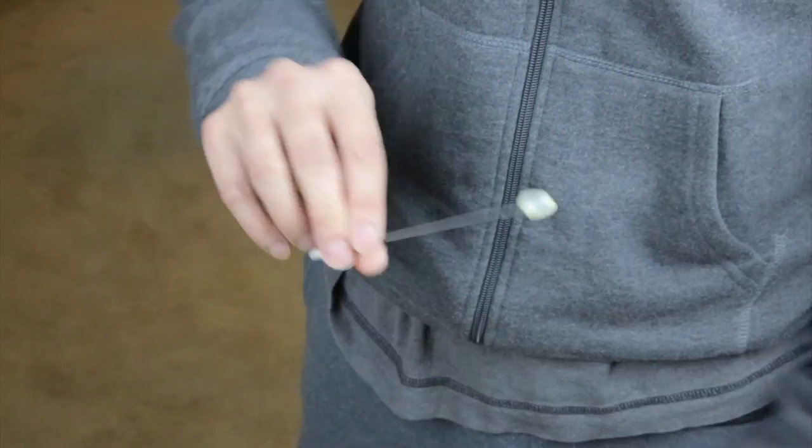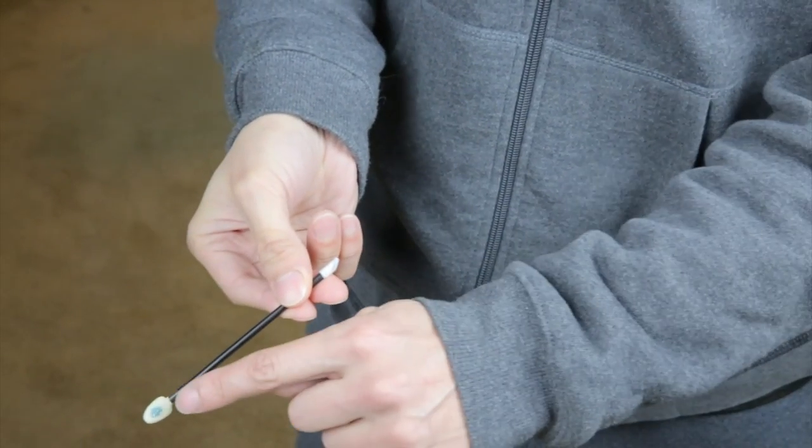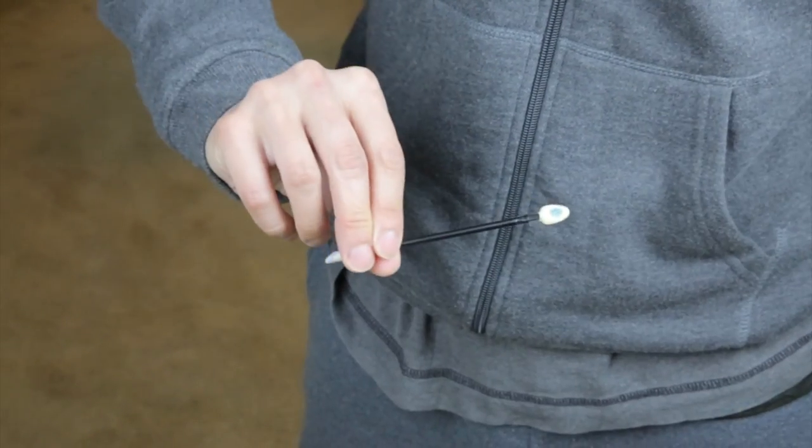First you start with a stick that has a little marking on both sides like this. You see there's a little blue dot on both sides of the stick.